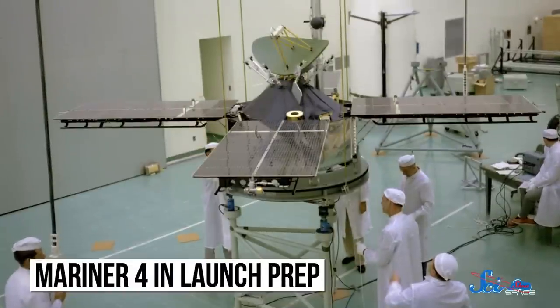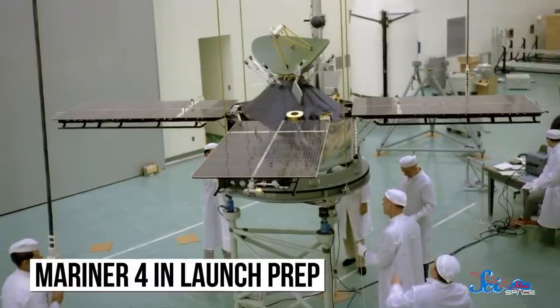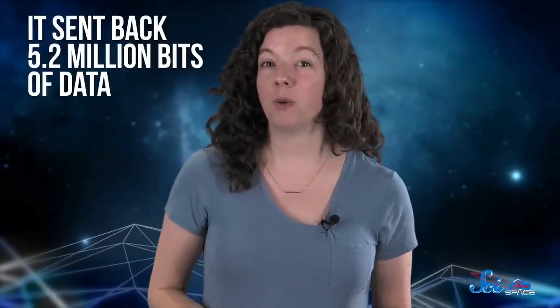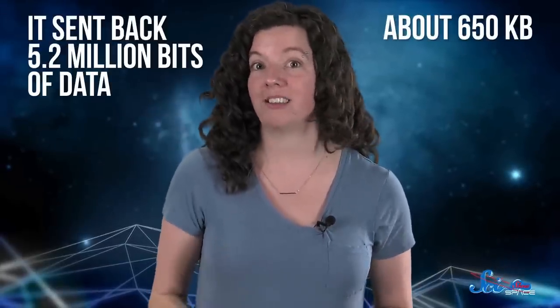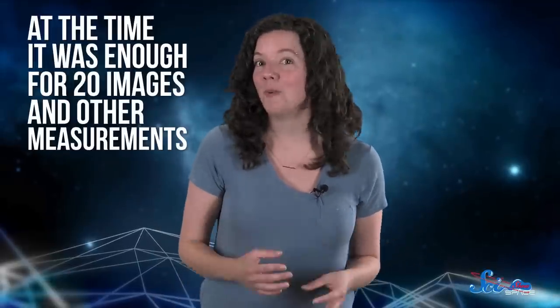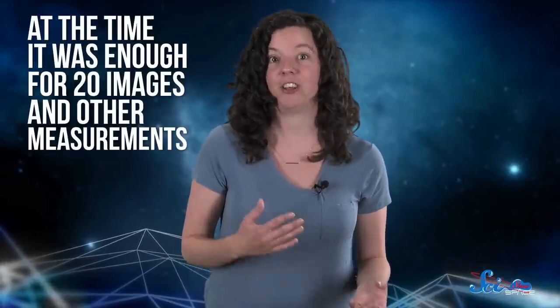Thankfully, everything went okay for Mariner 4, and in 1965, it became the first spacecraft to visit Mars. It sent back only 5.2 million bits of data, or about 650 kilobytes, which is probably less than it takes to store half a second's worth of the video you're watching right now. But at the time, that was enough to include about 20 images, plus other observations like surface temperature and pressure, along with the news that Mars also doesn't have much of a magnetic field.